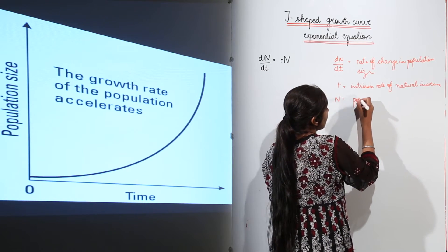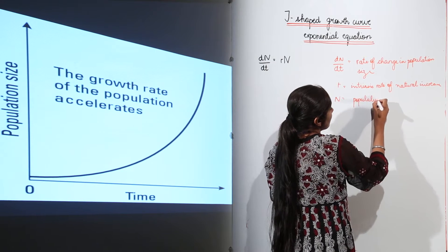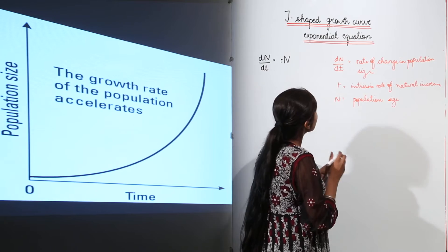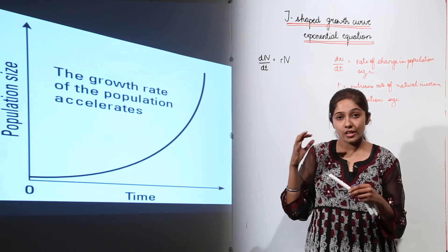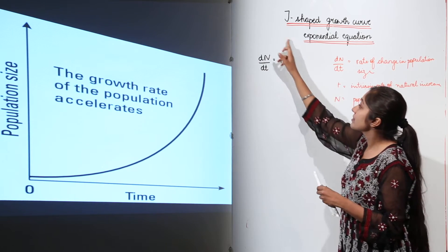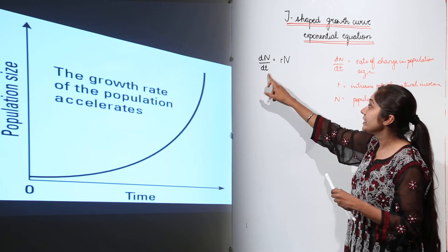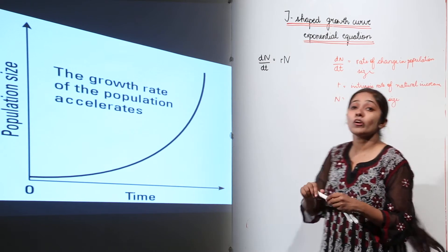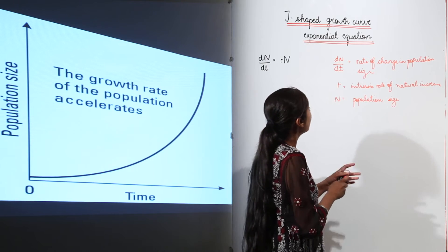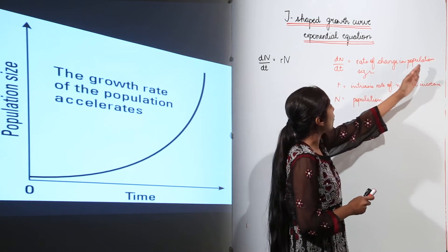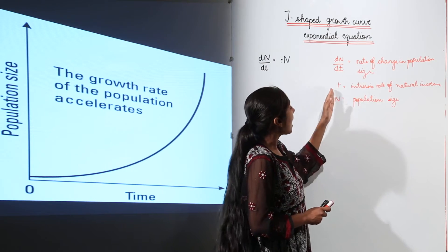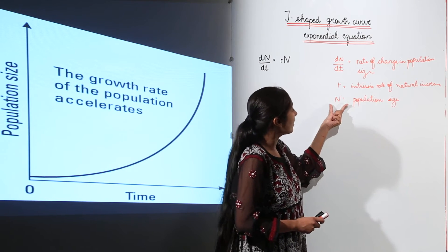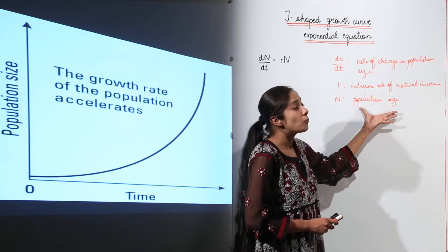N refers to population size in general. So to remember: the equation for the J-shaped growth curve is dn upon dt is equal to rN, where dn upon dt is the rate of change in population size, r is the intrinsic rate of natural increase, and N is the population size.